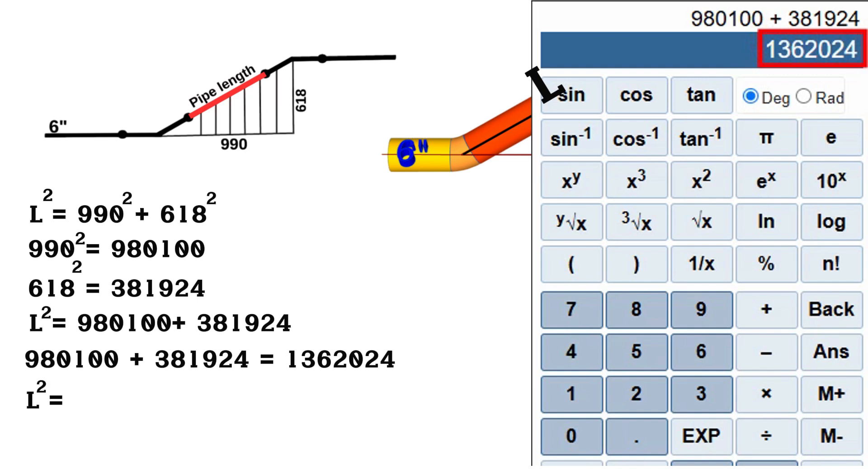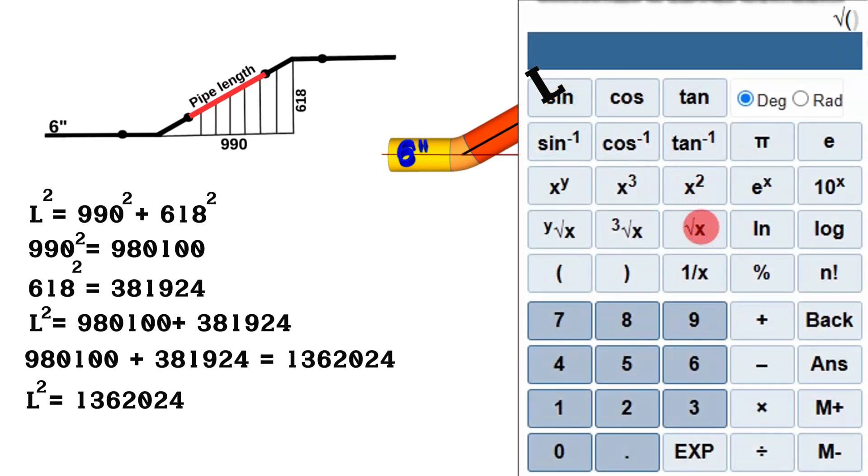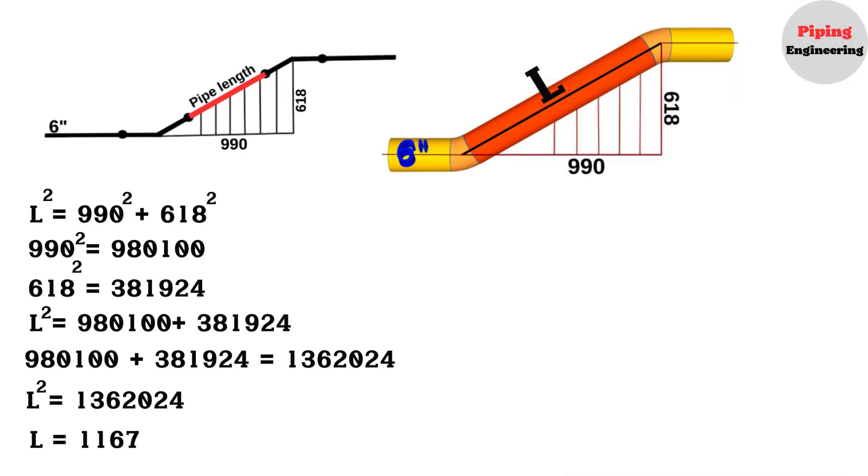Thus, the square of L will equal 1,362,024. Using the scientific calculator to find the square root, L equals 1,167. So, we calculated and found that the overall length and the center-to-center distance between the two elbows equal 1,167 millimeters.